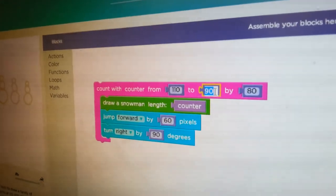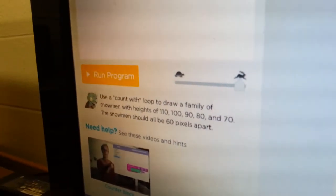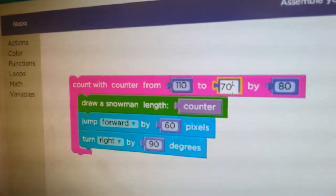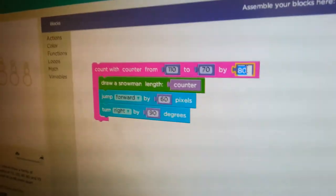All right, so what's your small snowman? My small snowman is 70. Okay, so 70. Now, if your snowman are going from 110 to 100 to 90 to 80 to 70, what are they changing by? 10s. Okay, but are they increasing or decreasing? They're decreasing. So should that number be positive or negative? Negative.